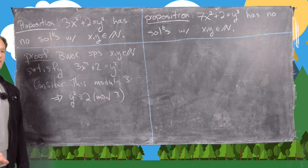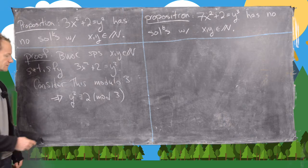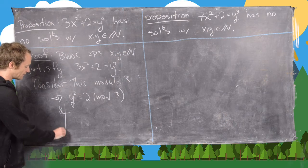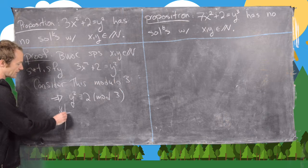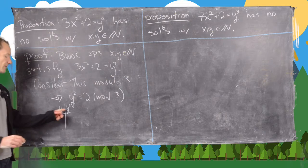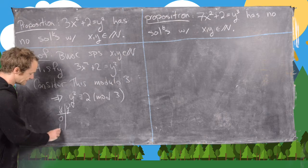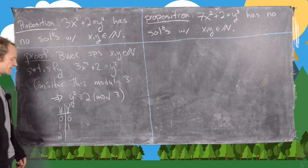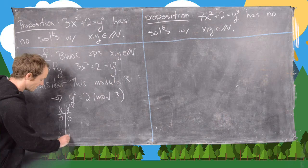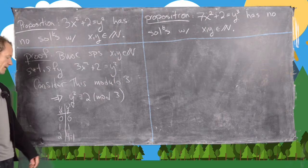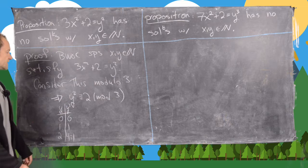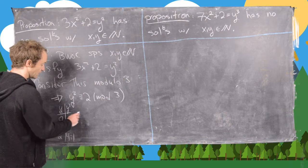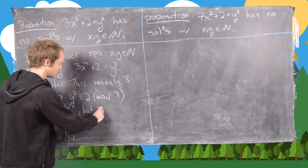Now 2 is not a quadratic residue mod 3. We can verify this by taking all possible values of y mod 3 and calculating y² mod 3. We have: 0² = 0, 1² = 1, 2² = 4 ≡ 1 (mod 3). None of these equal 2, so there is no solution and we have a contradiction.